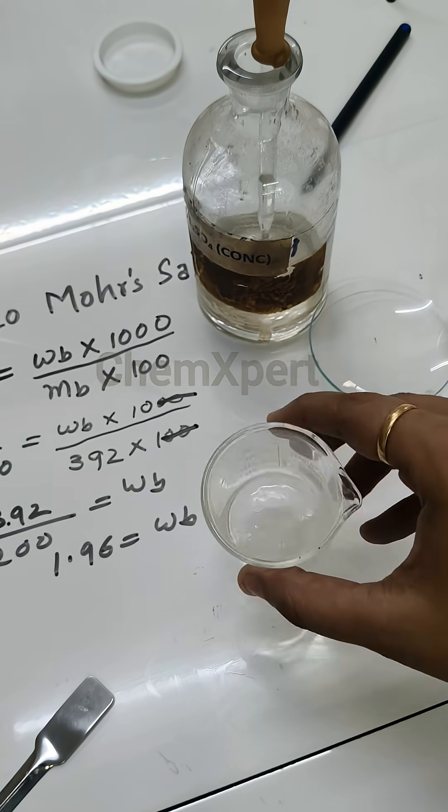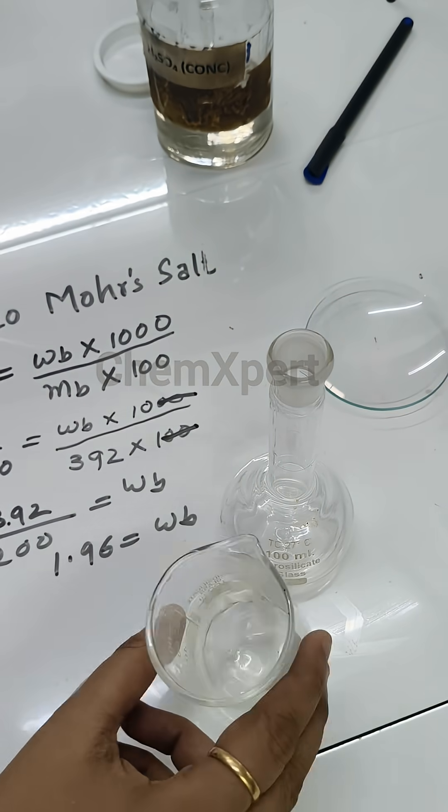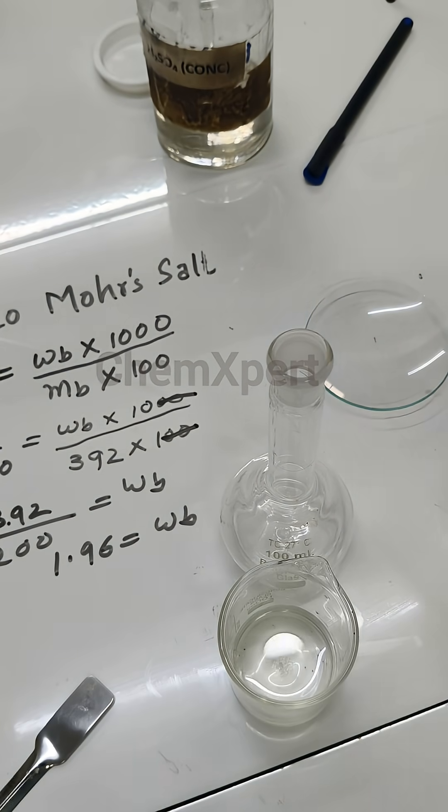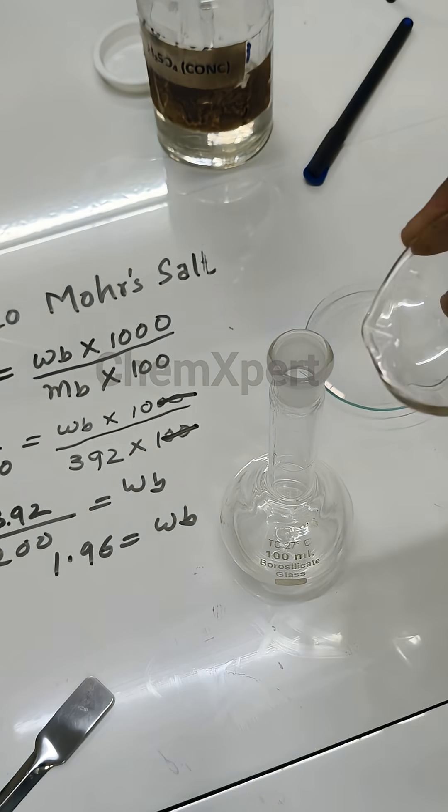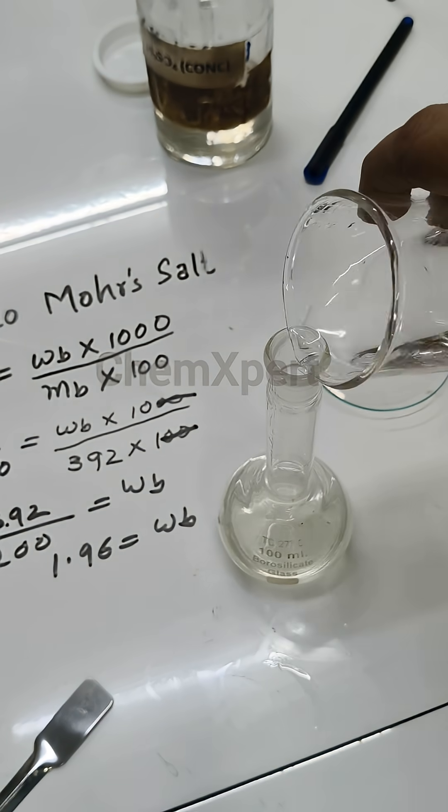Then add distilled water, dissolve in small amount of water and then pour this solution in this standard flask. Make sure you have completely dissolved the salt in a very small amount of water and then transfer it in the standard flask.